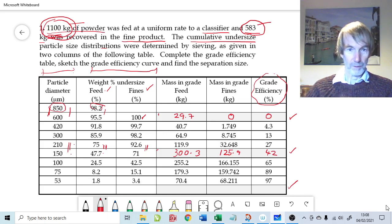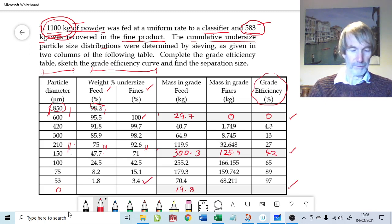Let's come down to the most interesting one, the last row. 1.8 percent of the feed distribution is less than 53 microns. So what is 1.8 percent of 1100? 0.018 times 1100 gives us 19.8 kilograms. What about the fines? 3.4 percent of 583, that's 0.034 times 583, which is 19.8. So all the solids, 19.8 kilograms of solids less than 53 microns go into this classifier.